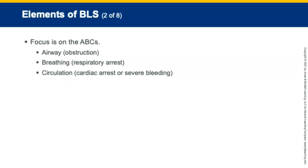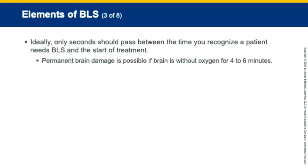BLS has a focus on ABCs: airway, which involves obstruction; breathing, such as respiratory arrest; and circulation, including cardiac arrest or severe bleeding. If the patient is in cardiac arrest, the CAB sequence—compressions, airway, breathing—is used because chest compressions are essential and must be started as quickly as possible.